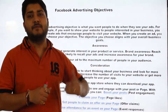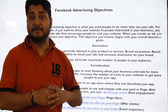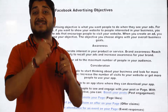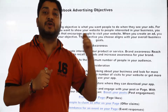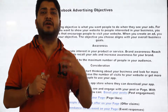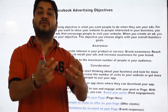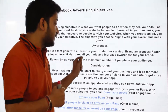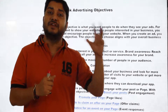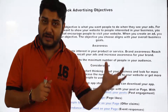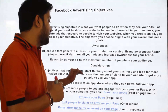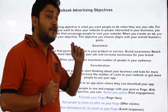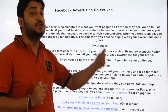Consideration is one major block where most campaign objectives are covered. This is where you want your user to consider something — for example, you want to promote your app and get users to install it by spreading information. Consideration involves an action, such as getting people to start thinking about your business and looking for more information.